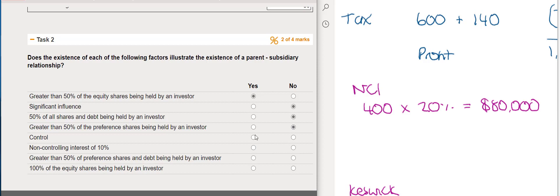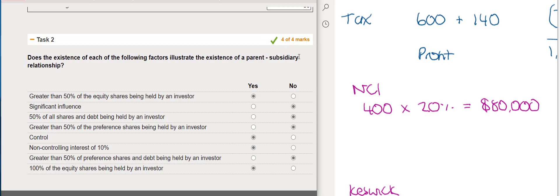Having control does indicate a parent-subsidiary relationship. A non-controlling interest of 10% implies a controlling interest of 90%, which would also indicate a parent-subsidiary relationship. Having greater than 50% of preference shares and debt does not indicate a parent-subsidiary relationship. Finally, 100% of equity shares being held by an investor does confirm a parent-subsidiary relationship. Reviewing all answers, all marks are achieved for Task 2.